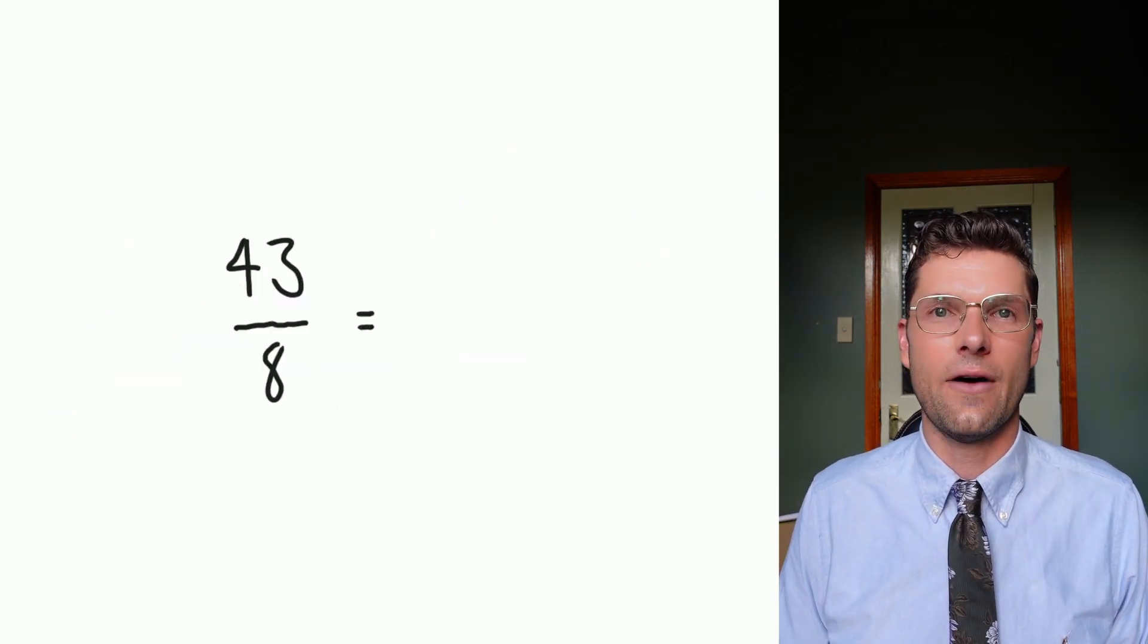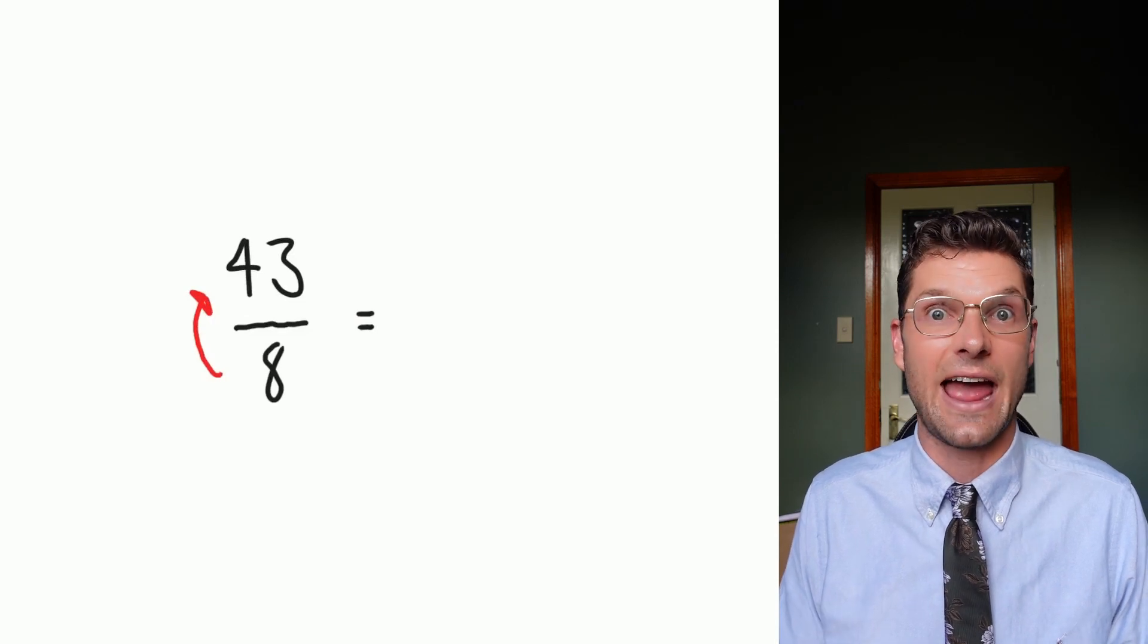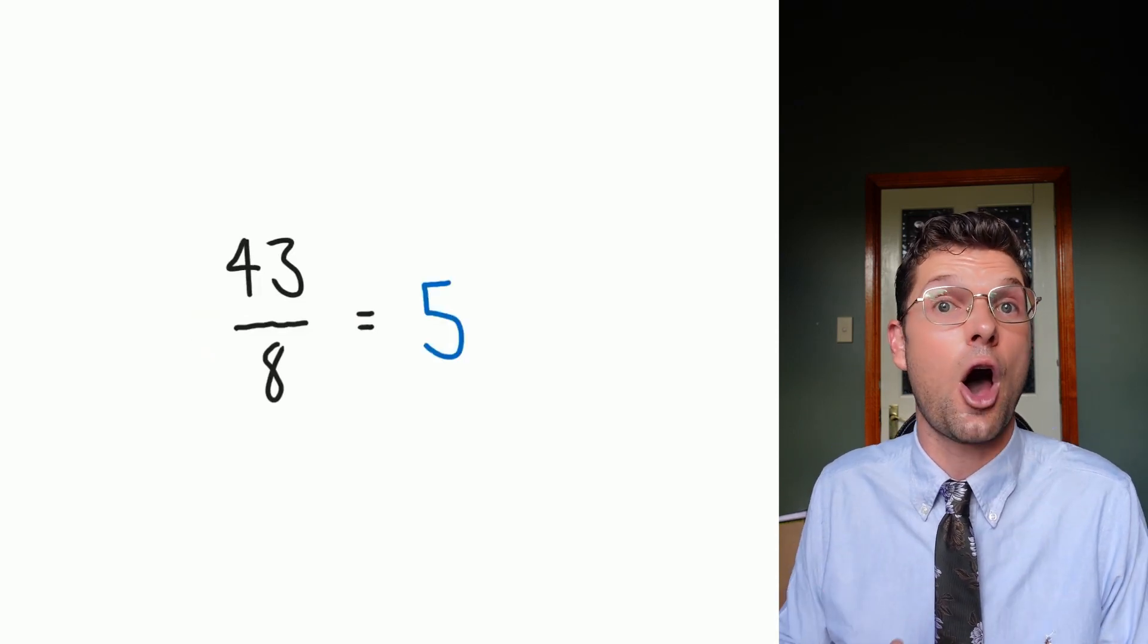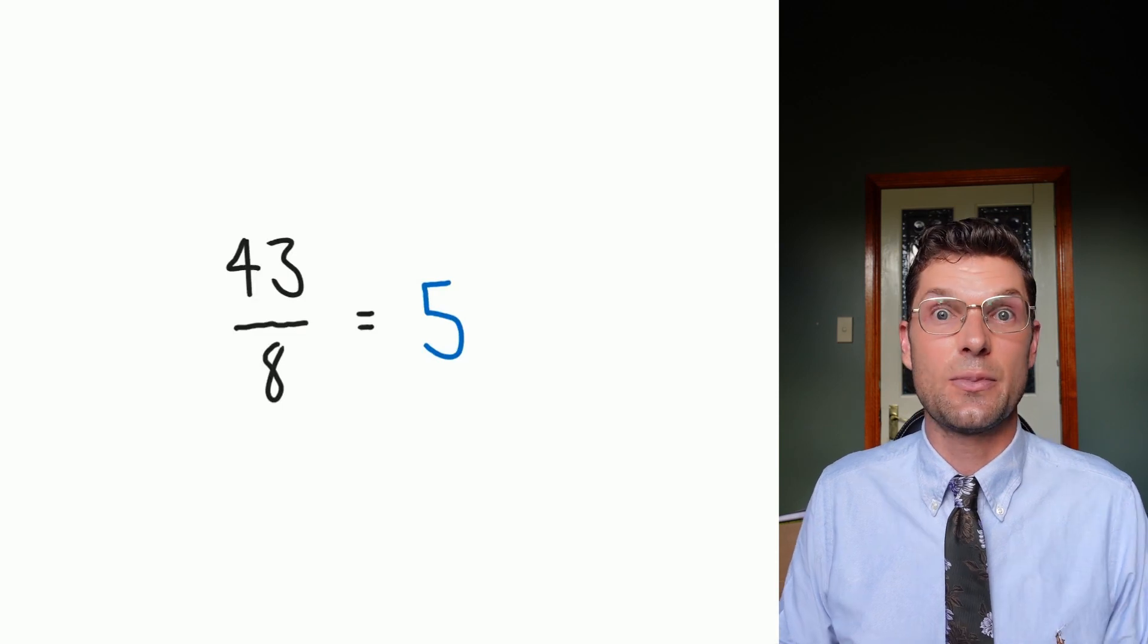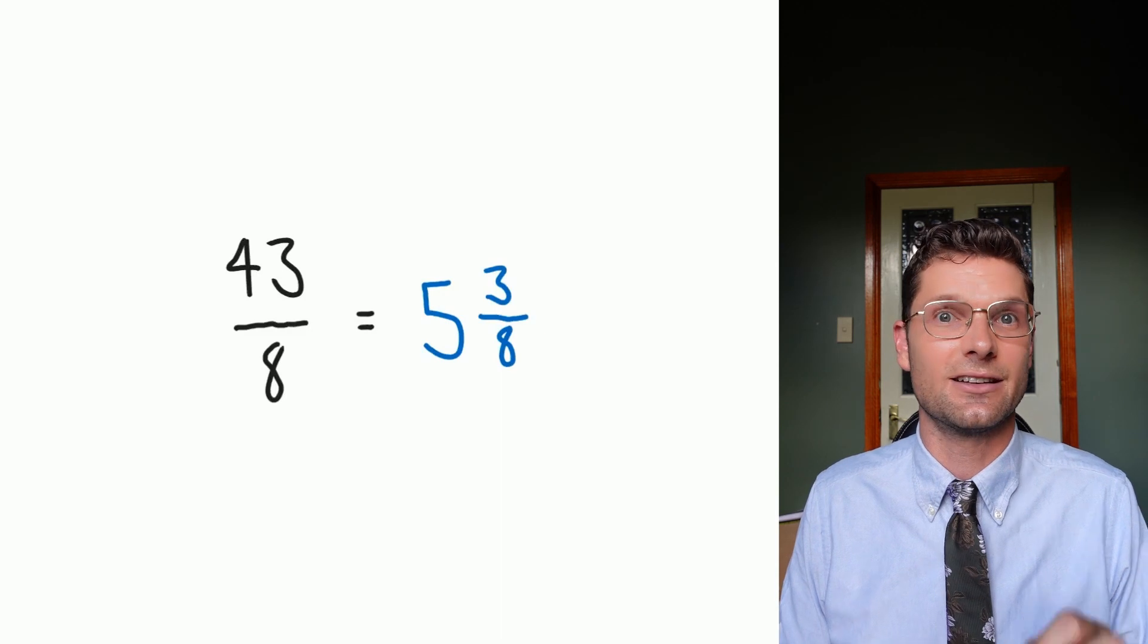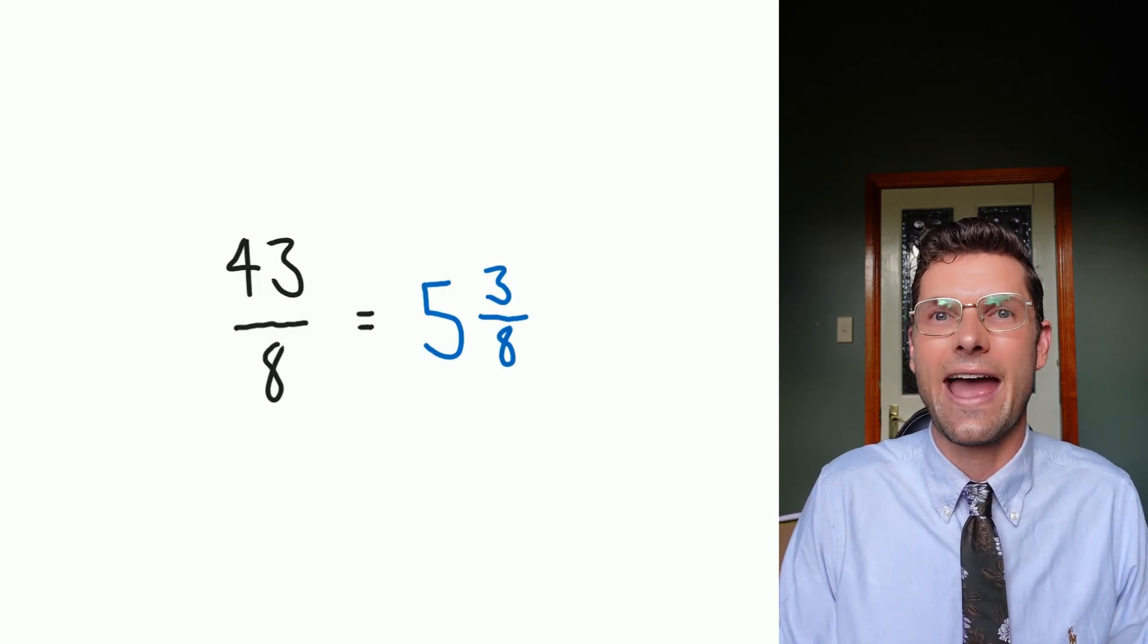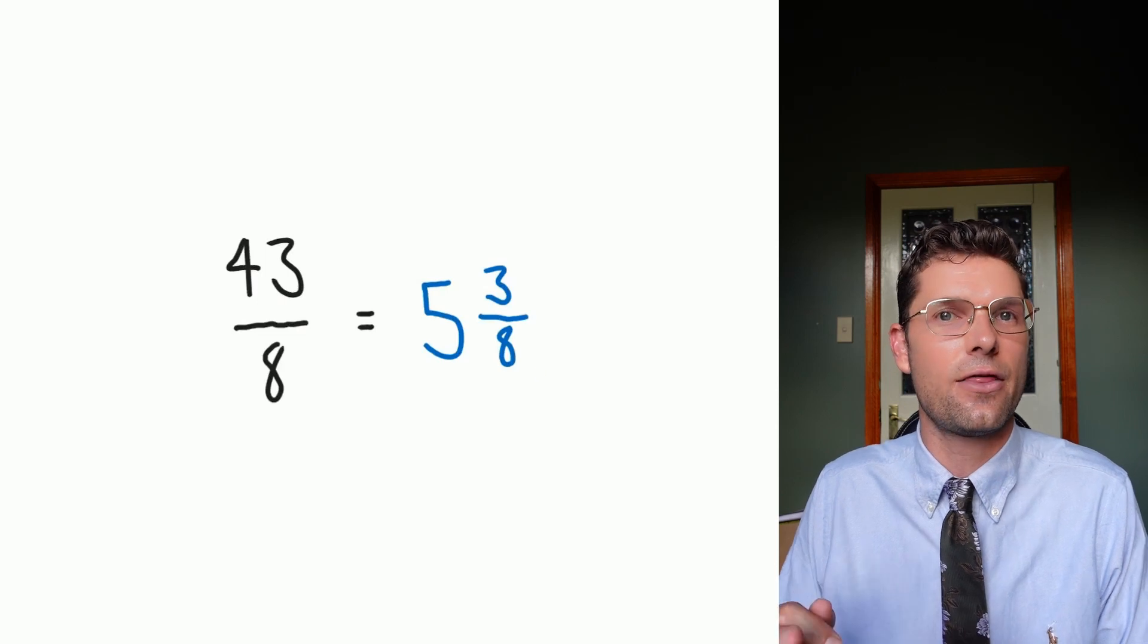In this next example, I've got 43 over eight. So eight fits into 43 five times. Five times eight is 40. So five is the whole number that's gonna go out the front. So because I've got 41, 42, 43, three remainder, three goes over that original eight, three over eight. This is the correct answer. I've got 43 over eight is the same as five and three eighths.